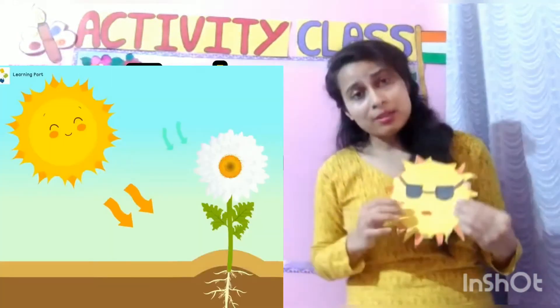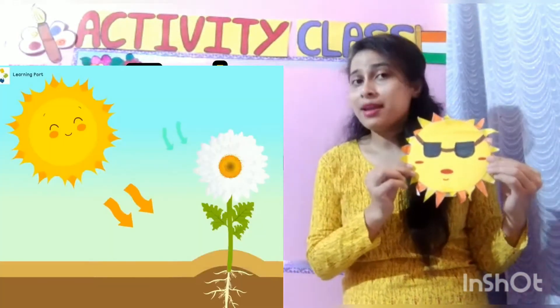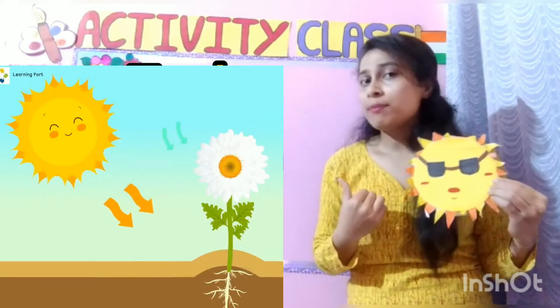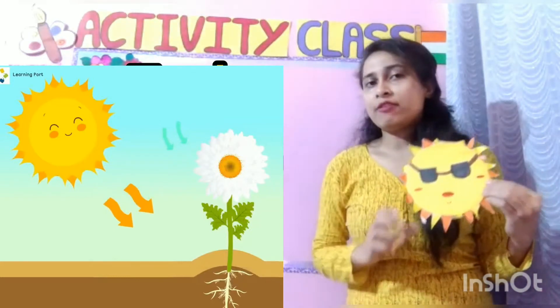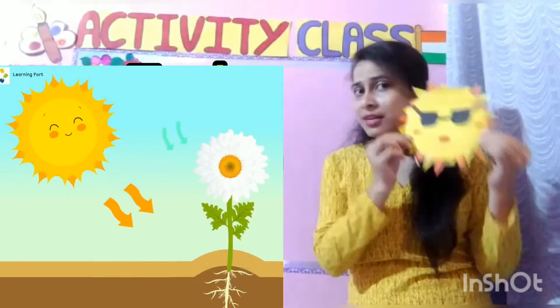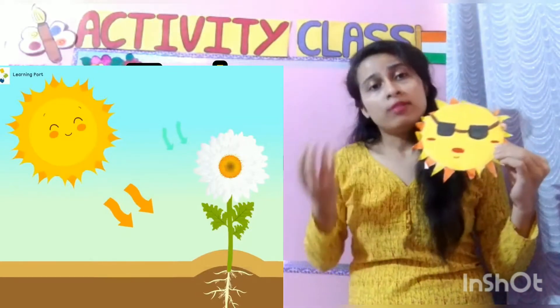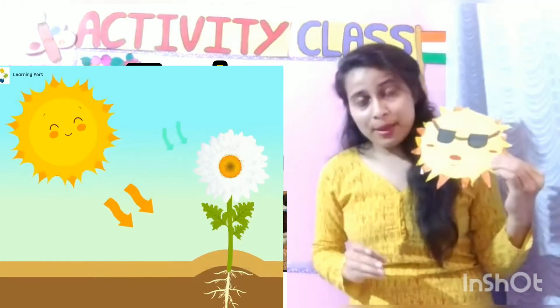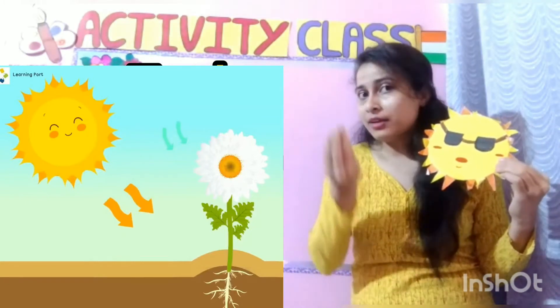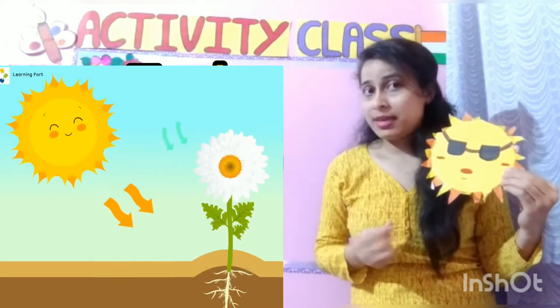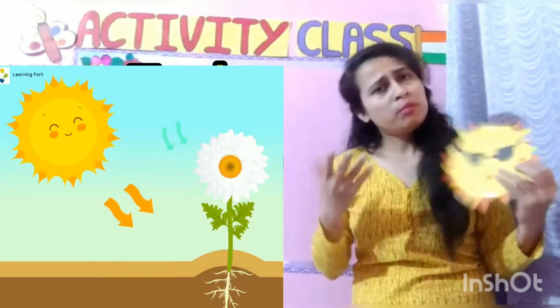और हम पूरे टाइम लाइट तो नहीं जला सकते हैं. हमारे साथ साथ plants को भी sunlight की नीड होती है. मैंने आपको बताया था न, previous class में, कि जो leaves होती है, वो अपना food बनाती है — पूरे plant के लिए food बनाती है — leaves sunlight की presence में. ठीके? तो जो sunlight ही नहीं होगी, तो leaves plant के लिए food नहीं बना पाएंगी, तो plant grow नहीं कर पाएगा, बड़ा नहीं हो पाएगा, और फिर उसमें से fruit, vegetables भी नहीं लगेंगी.